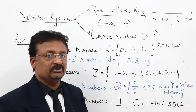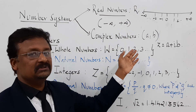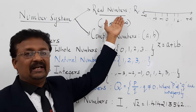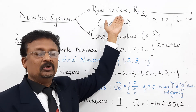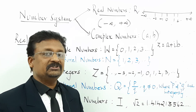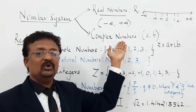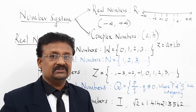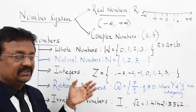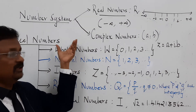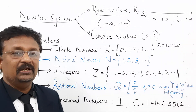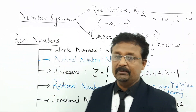So number system is broadly divided into real numbers and complex numbers. From class 1 till class 10 we used to deal with real number discussion only. From class 11 onwards we deal with complex numbers. Now let's look at the types of real numbers — how real numbers can be classified into different types.